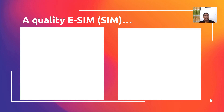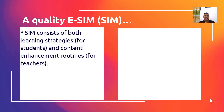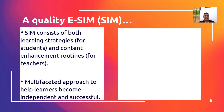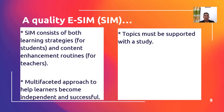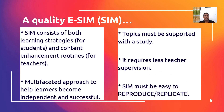What are the characteristics of a quality ESIM or simply SIM? Quality Strategic Intervention Material consists of both learning strategies for students and content enhancement routines for the teachers. It takes a multi-faceted approach to help learners become independent and successful. Topics in the SIM must be supported with study, it requires less teacher supervision only, and SIM must be easy to reproduce or replicate.